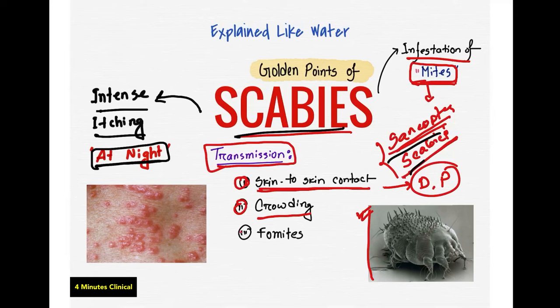Another problem is fomites. Fomites means furniture like chairs or tables or any kind of furniture. If a scabies-infected person uses a chair or table, the mite can survive on that surface normally for about 1 to 1.5 days, giving a chance for the healthy person sitting next to get infected.